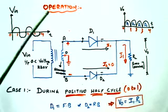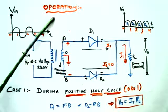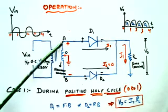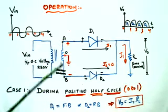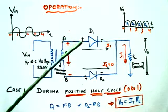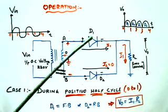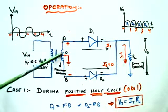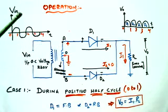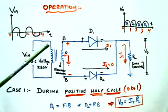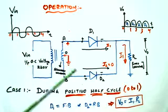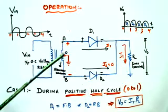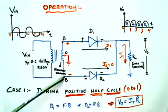Now we will discuss the operation of full wave rectifier. It consists of two diodes D1 and D2, and a center tap secondary winding AB. Diode D1 utilizes the AC voltage appearing across the upper half of the secondary winding, OA, for rectification. Similarly, diode D2 utilizes the lower half of the secondary winding, OB, for rectification.